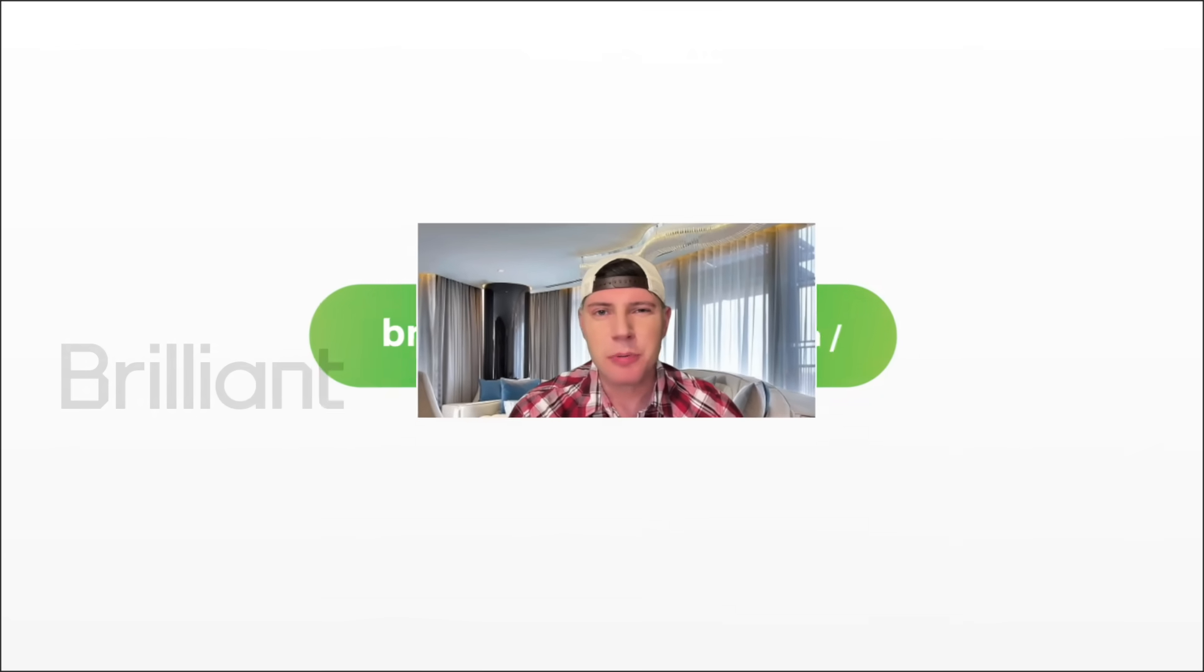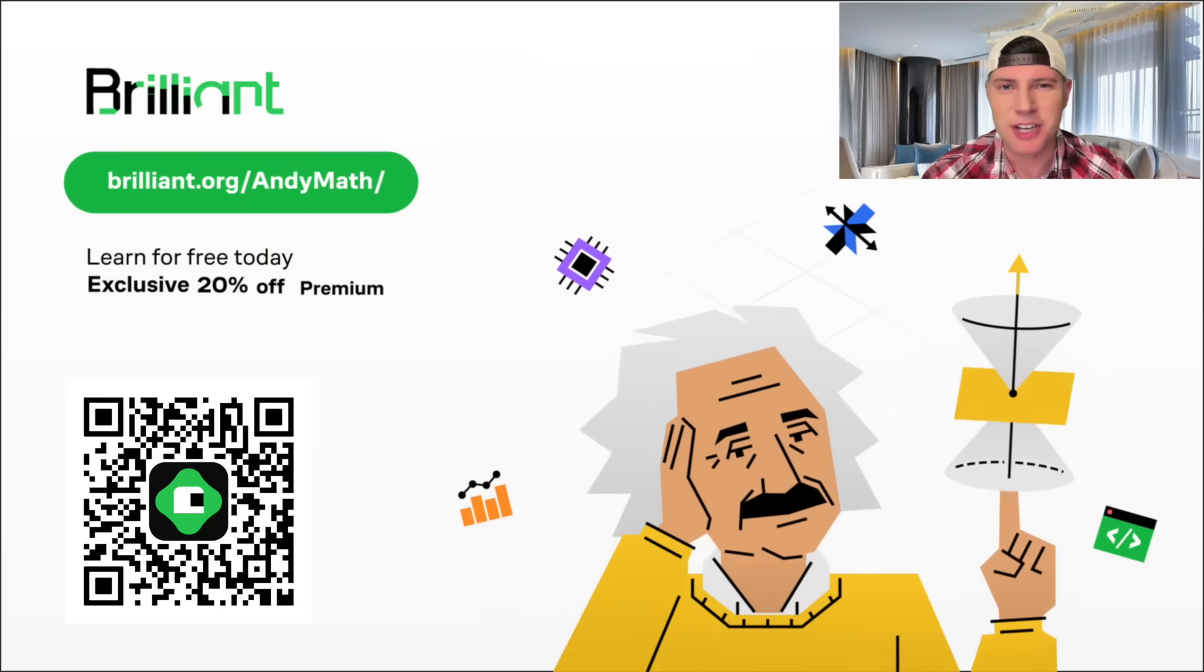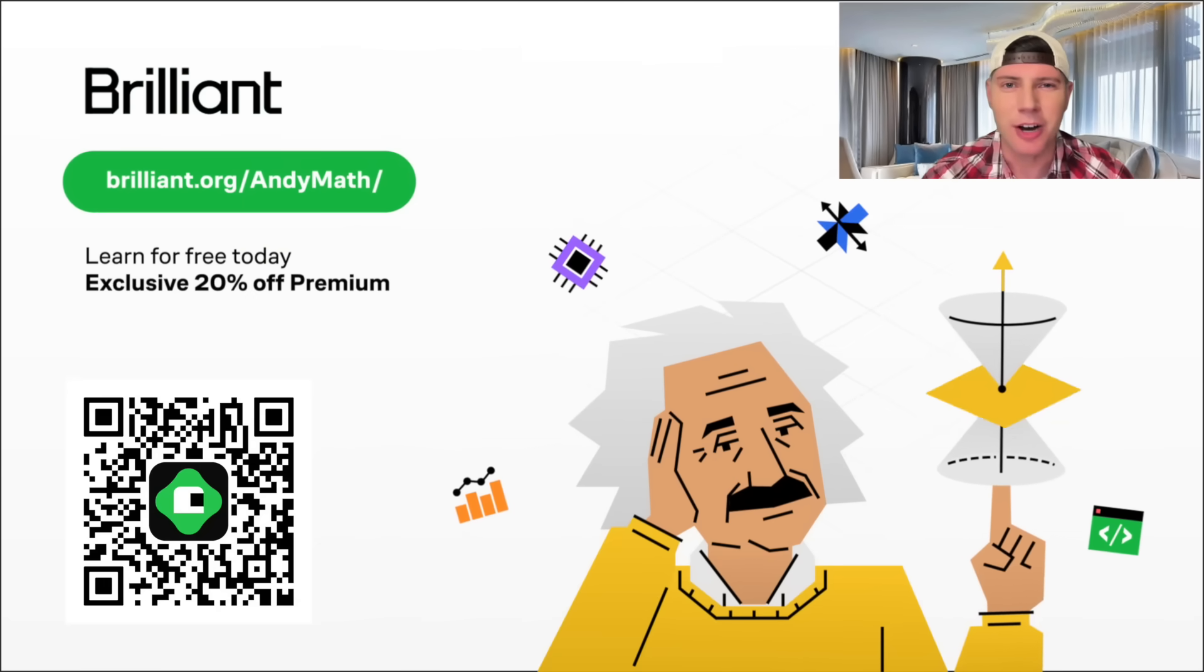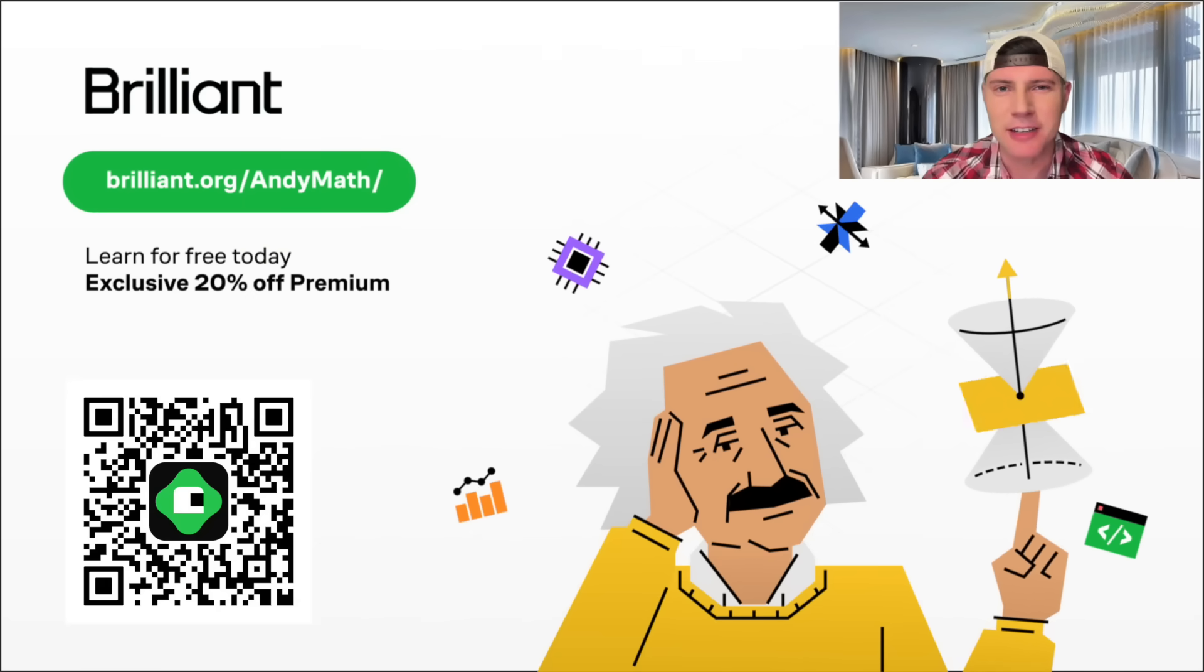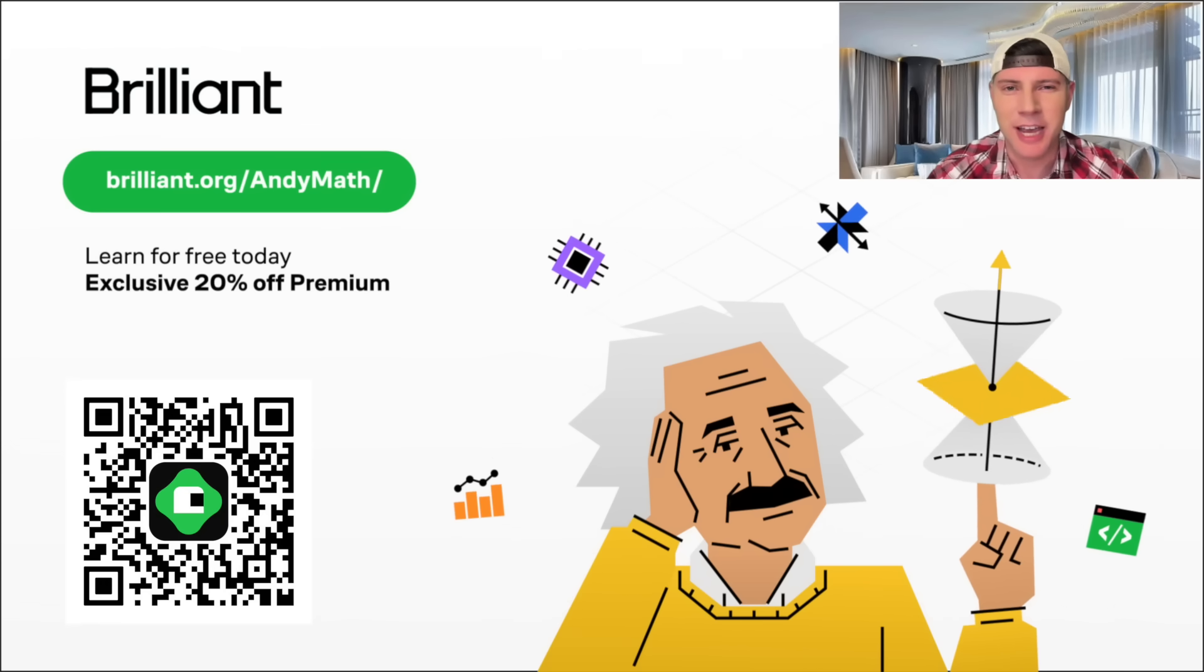If you want to try Brilliant for free, visit brilliant.org/andymath or scan the QR code on the screen, or you can click on the link in the description. You can also get 20% off an annual premium subscription. How exciting!